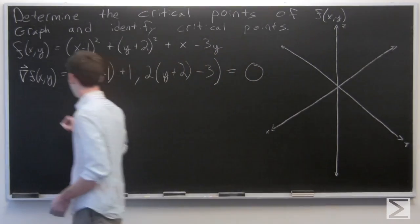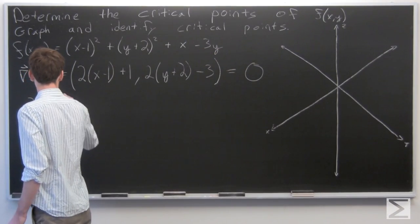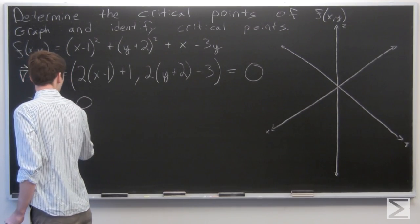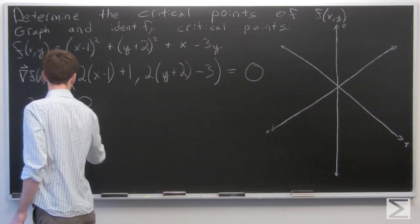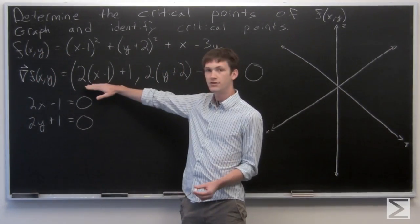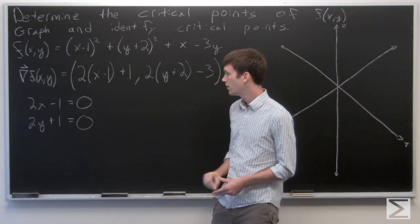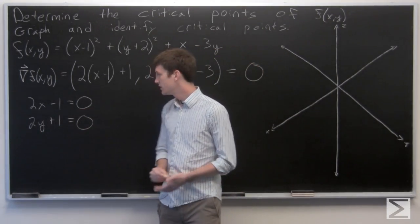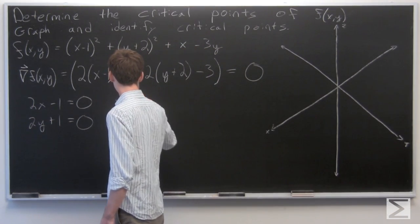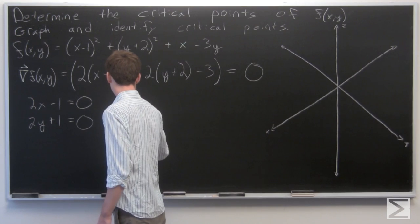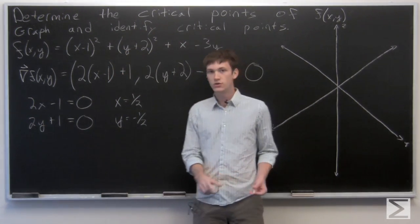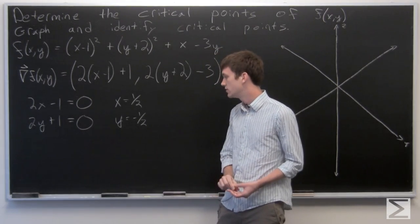So if we do that, we see that we have 2x minus 1 equals 0, and 2y plus 1 equals 0 by setting each of the components equal to 0. We can solve both of these simultaneously and we get that x equals 1/2 and y equals negative 1/2.